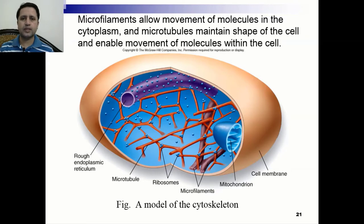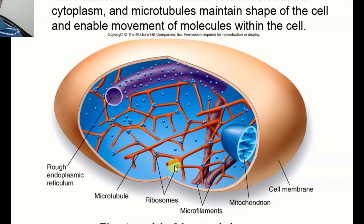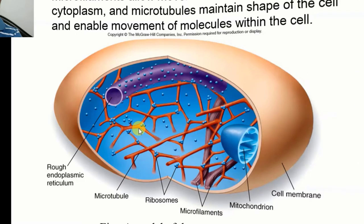This is the structure of the cytoskeleton present in the cytoplasm. This is the rough endoplasmic reticulum, and here you can see the microtubule, and these are ribosomes attached with the microtubules. This structure is the microfilament structure present in the cytoplasm. This is the overall model of the cytoskeleton present in the cytoplasm.